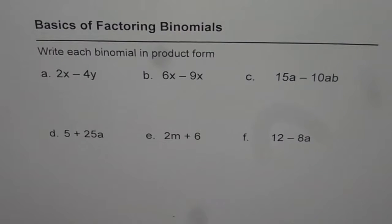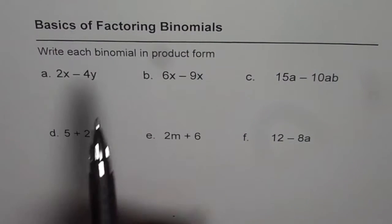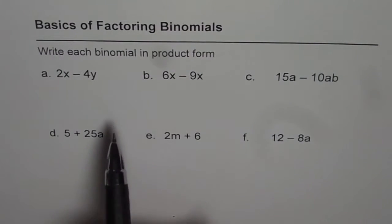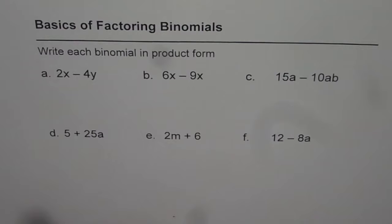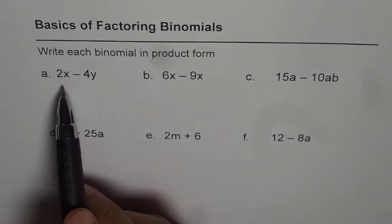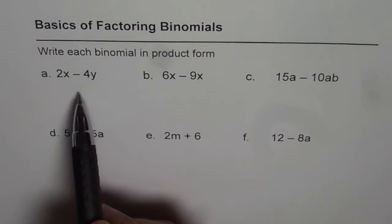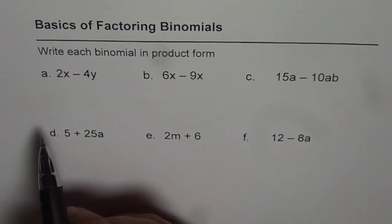Basics of factoring binomials. I'm Anil Kumar and with the help of this video we will try to understand what factoring is and how we should do it — write each binomial in product form. Factoring is writing a sum or difference form into product form. If you remember, you can write 12 as 3 times 4; 3 and 4 are factors of 12. Similarly in polynomials, a sum or difference of two polynomials can be written as a product of two polynomials, and that process is called factoring.